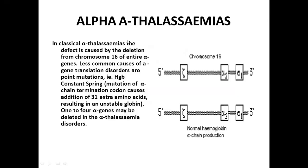In classical alpha thalassemia, the defect is caused by deletion from chromosome 16 of entire alpha genes, affecting alpha gene transcription and translation. Others involve point mutations — such as Hemoglobin Constant Spring, which is a mutation of the alpha chain's termination codon causing addition of 31 extra amino acids, resulting in an unstable globin.